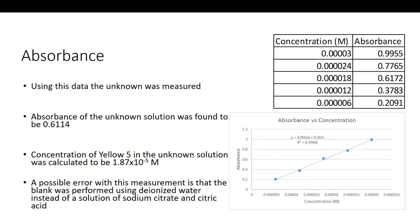Again, we want to point out a possible error. In this case, it's that we used plain DI water to make our blank instead of a solution of sodium citrate and citric acid, which is what our actual unknown was found in. So it's possible that this would affect the transfer of light through our solution and may have caused our measurements to be off to a small degree.